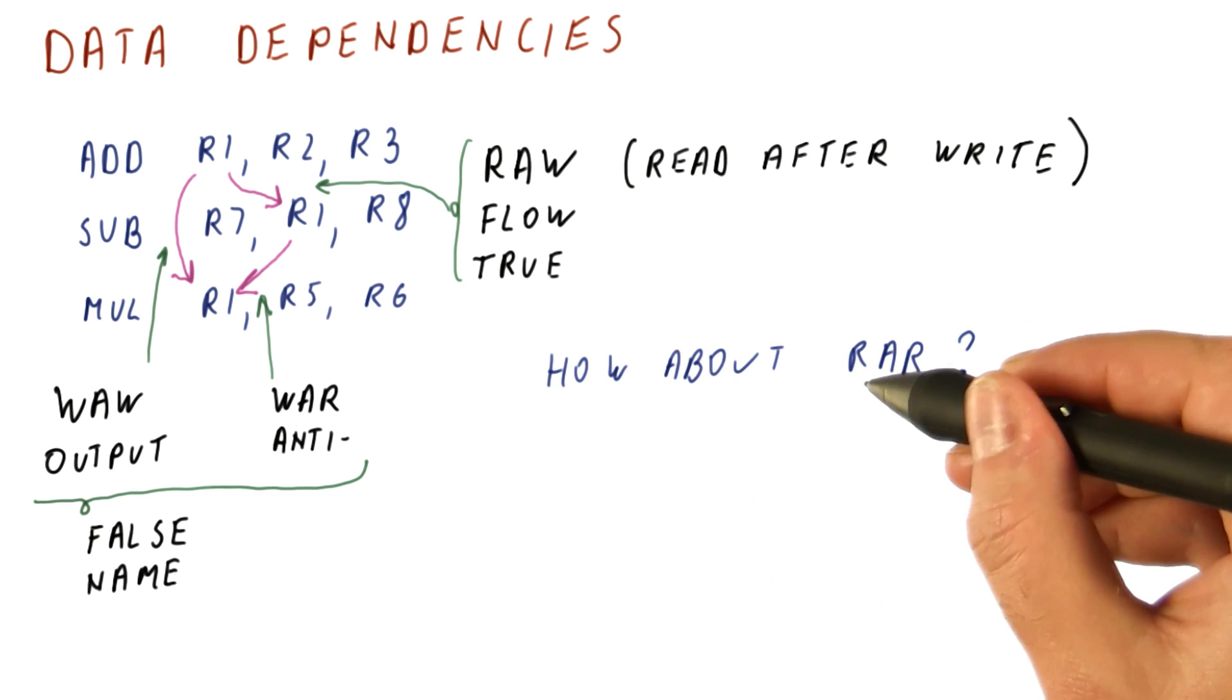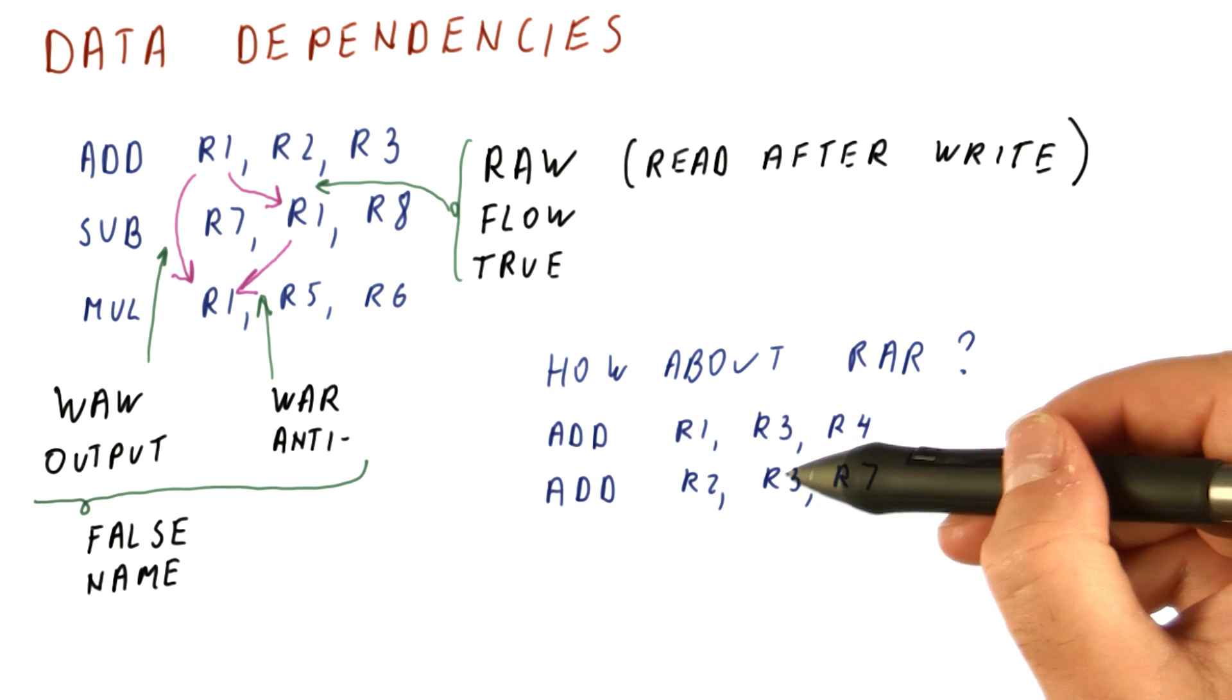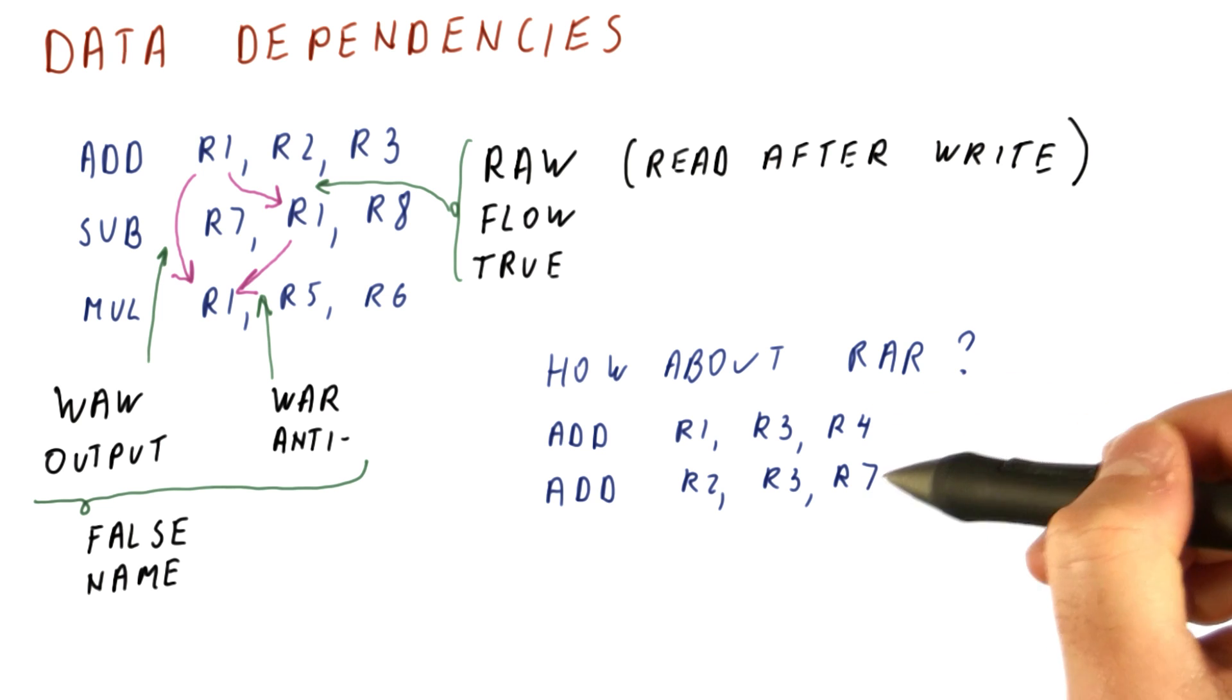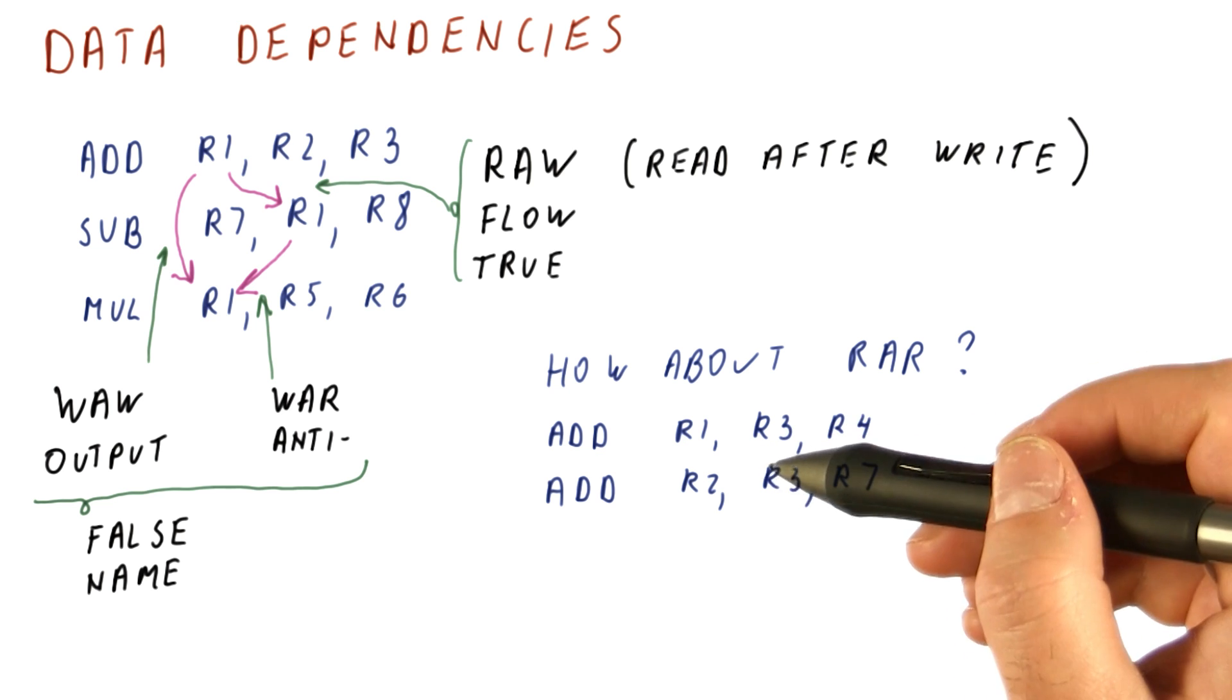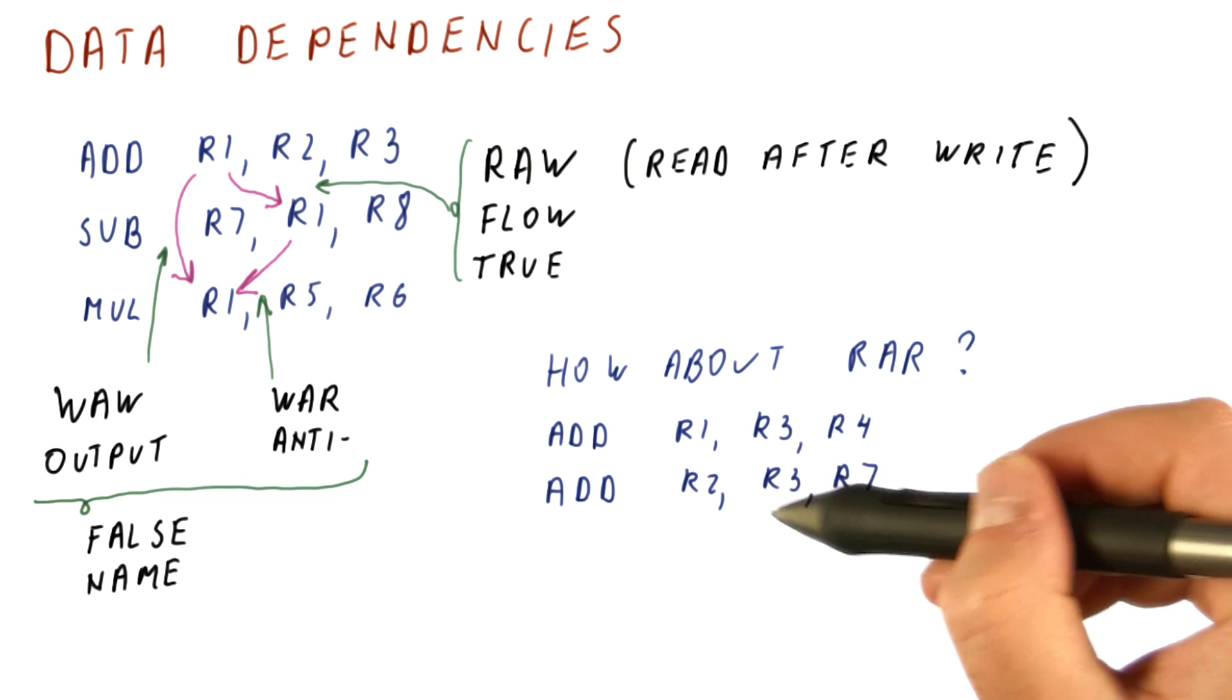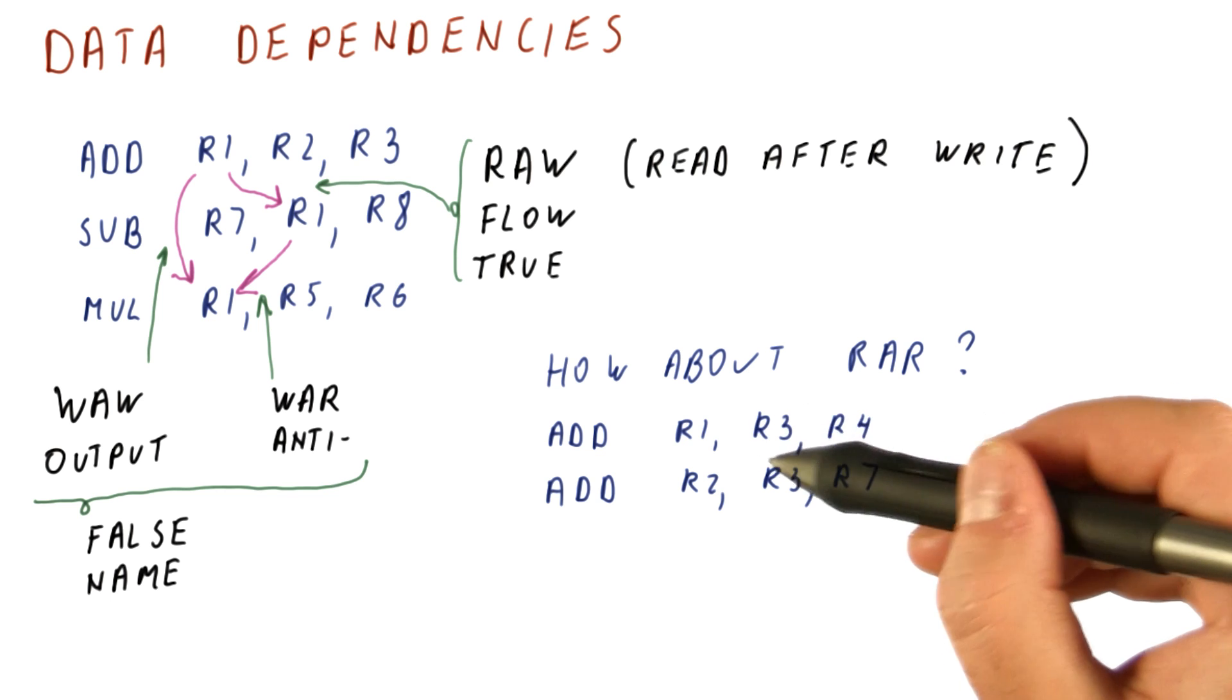So how about a read after read dependence? That's the only one that is missing here. Let's say we have two adds, both of which are reading R3. Read after read is not a dependence because these two instructions don't need to be done in the order of that dependence. We can reorder these two instructions, they will still read the correct value of R3, so that is why this is not a dependence. The second instruction doesn't depend on the first one, it can be done before or after it.